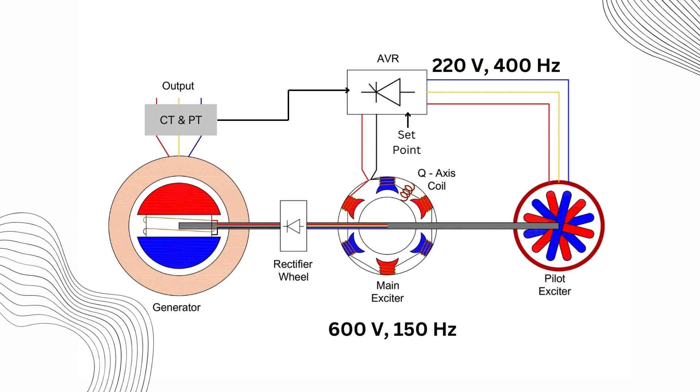In the brushless excitation system, rectification occurs twice. First in the AVR using thyristors and again in the diode rectifier wheel using diodes. This dual rectification process ensures a stable and reliable DC supply to the rotor.